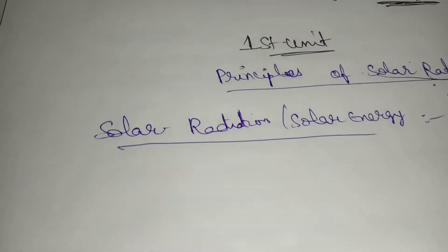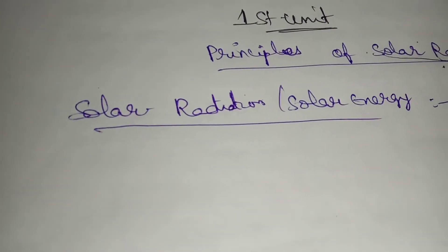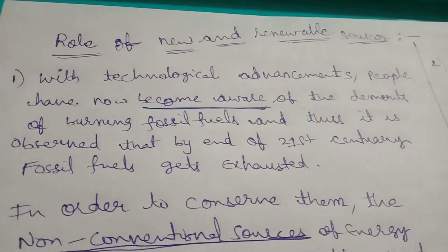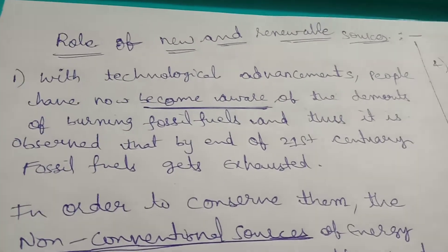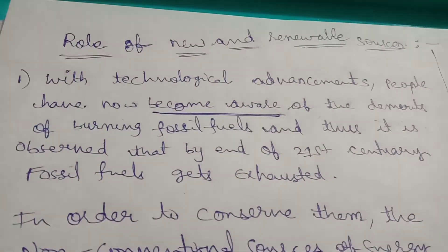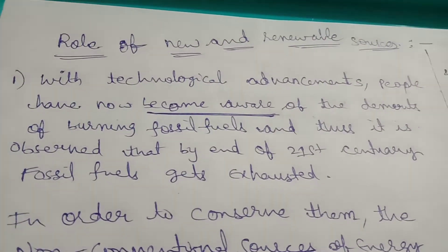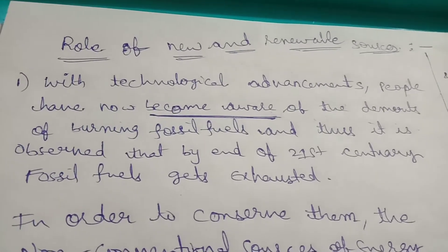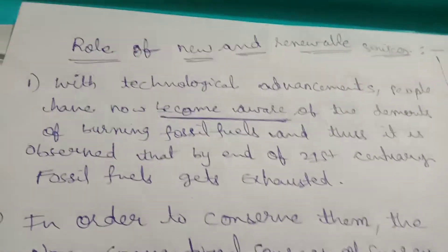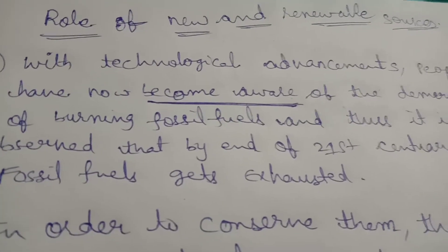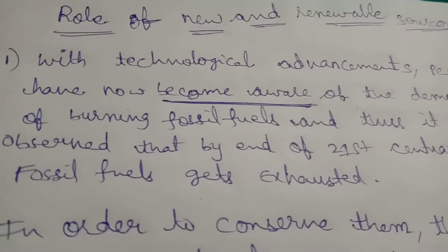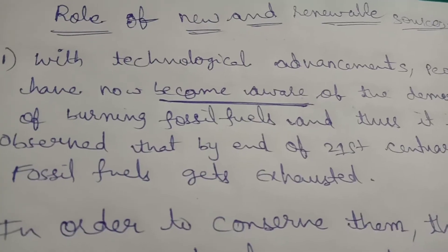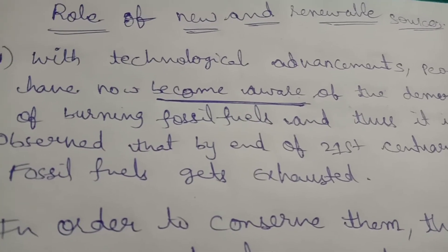The first topic in this unit is roles and potentials — roles of new and renewable sources. With technological advancements, people are now aware of the demerits of burning fossil fuels such as coal and petrol. There are disadvantages to these, including causing so much pollution.